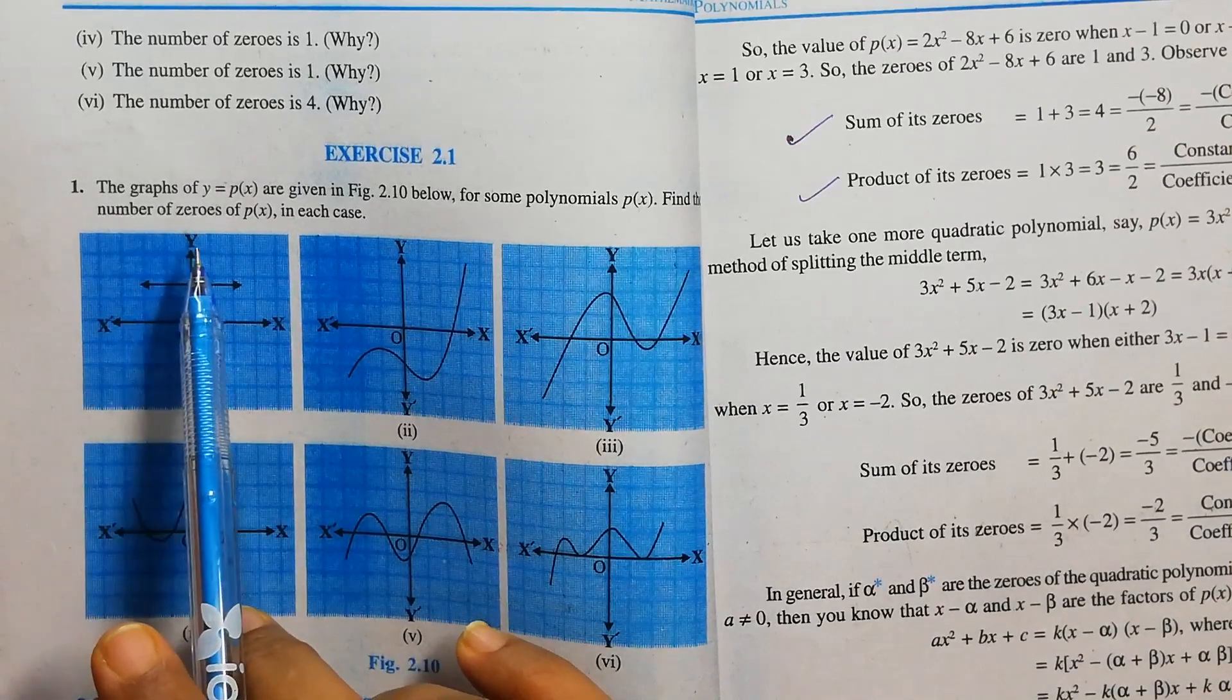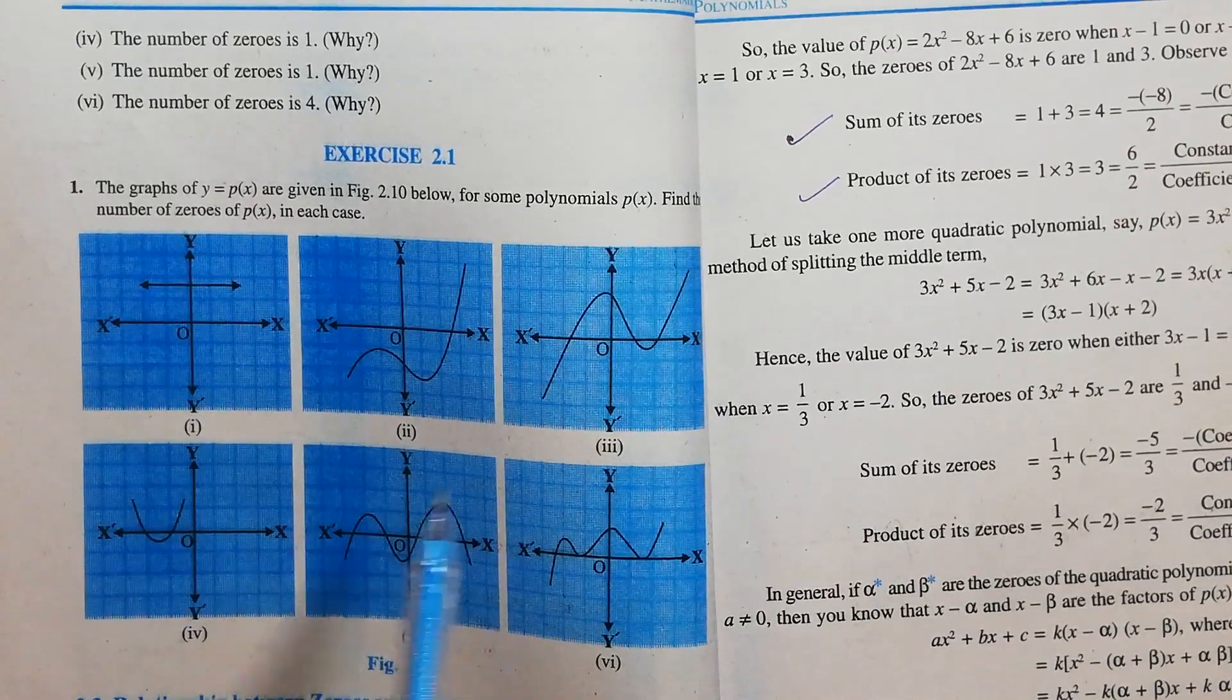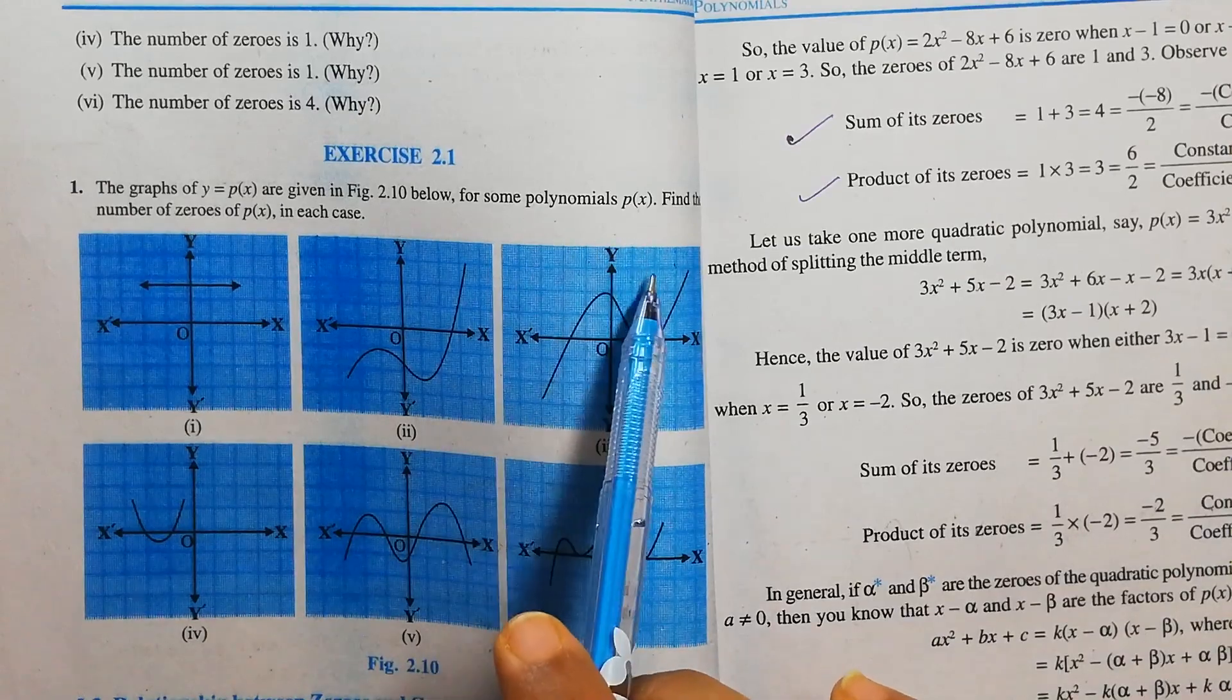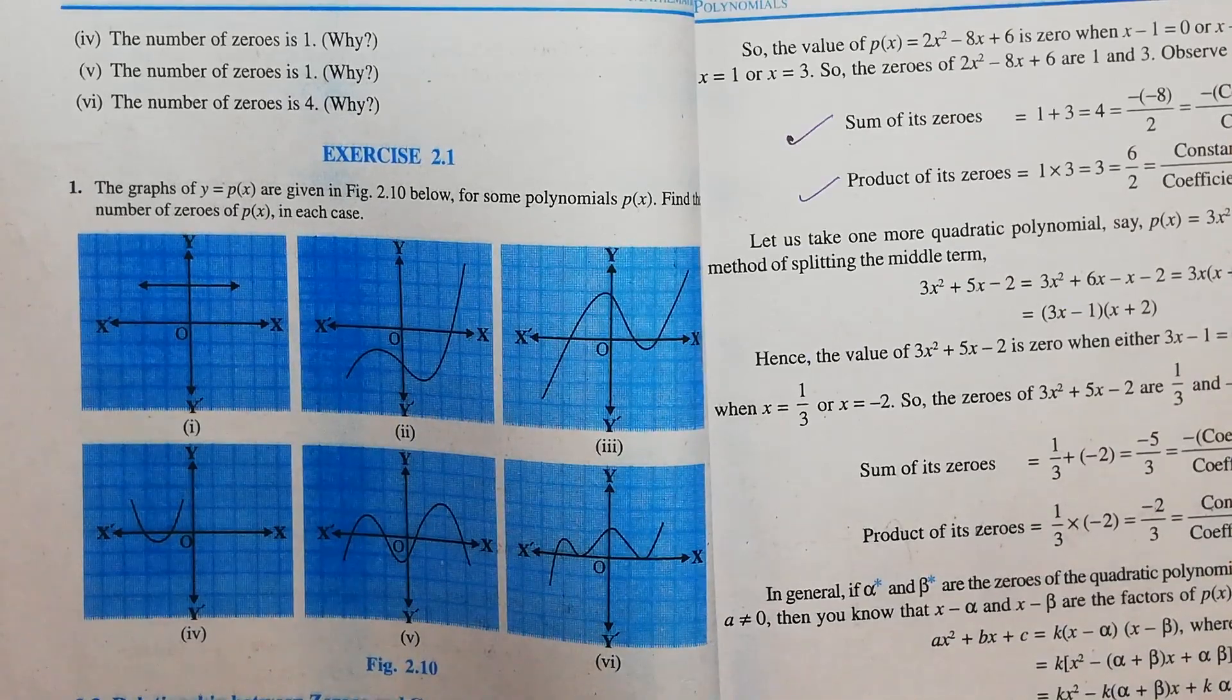The graph of y equal to p(x) is given for some polynomial p(x). Find the number of zeros of p(x) in each case.